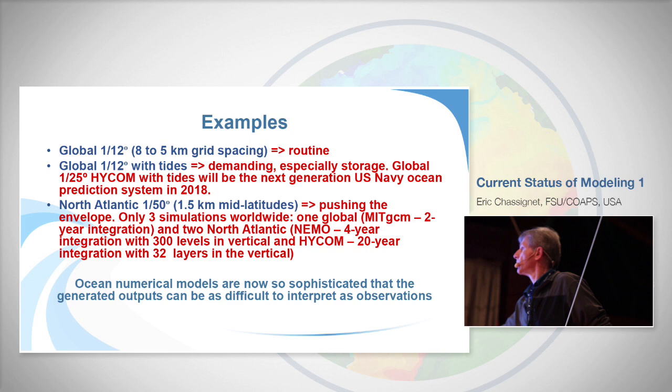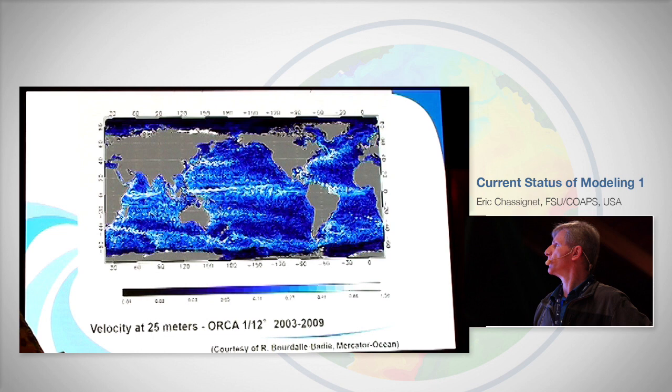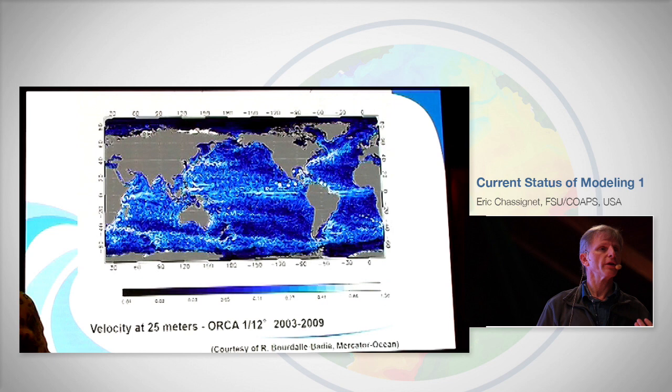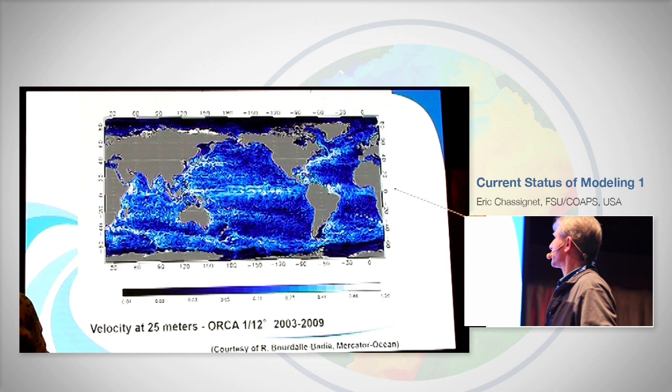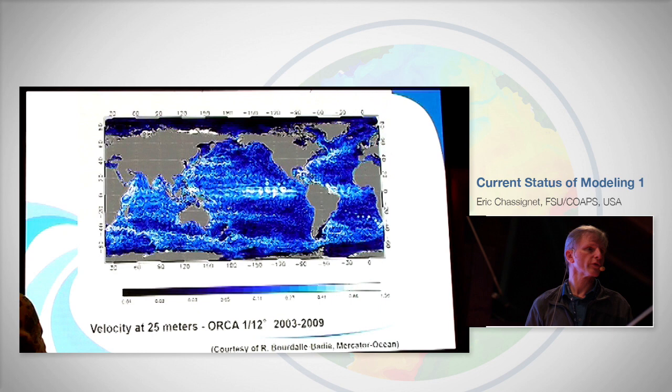Here is the classic 1/12th degree configuration — an example provided by the Mercator group. This shows velocity at 25 meters depth from the NEMO model. You can see it is what we call an eddying model — eddy-resolving at most latitudes, though not everywhere globally. You see the train of tropical instability waves, Agulhas eddies, the Gulf Stream, and Western Boundary Currents all well represented. It's a good first approximation to what we believe the ocean is.